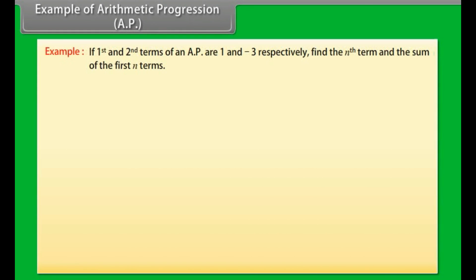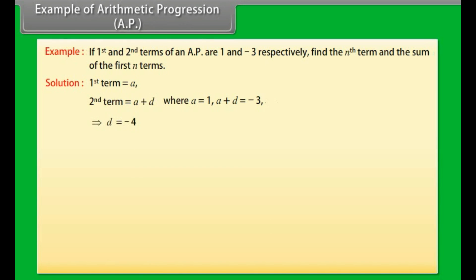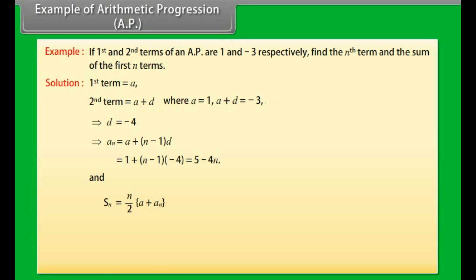Example: If the first and second terms of an AP are 1 and −3 respectively, find the nth term and the sum of the first n terms. Solution: First term a = 1, second term a + d = −3, which implies d = −4. Therefore an = a + (n−1)d = 1 + (n−1)(−4) = 5 − 4n. And Sn = n/2 × (a + an) = n/2 × (1 + 5 − 4n) = n(3 − 2n).